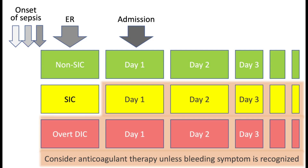When managing sepsis in the ICU, it is critical to classify patients early based on their coagulation status. Upon admission, patients can be categorized as non-SIC, SIC, or overt DIC. For non-SIC patients, monitoring continues throughout their stay, while SIC patients must be assessed daily to monitor progression. Overt DIC is more severe, requiring closer monitoring and potential intervention. Anticoagulant therapy should be considered for SIC and overt DIC cases unless there are signs of bleeding. Early identification and appropriate treatment can make a significant difference in patient outcomes.